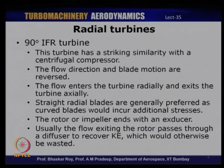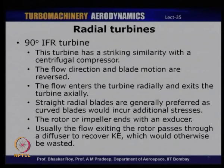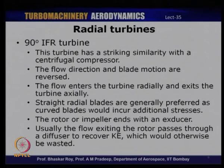In a turbine, curved blades are theoretically possible but the blade curvature would induce more stresses, so it is very uncommon to see curved blades for IFR turbines. Normally they are all straight radial blades, and the rotor ends with what is known as an exducer. In a compressor we have an inducer that turns flow from axial to radial; similarly in an IFR turbine rotor we have an exducer that turns the flow from radial to axial direction.